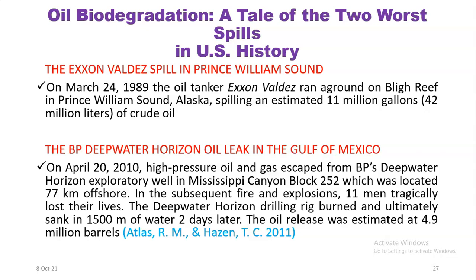The second case is the BP Deepwater Horizon oil leak in the Gulf of Mexico. On April 20, 2010, high-pressure oil and gas escaped from BP's Deepwater Horizon well located approximately 77 kilometers offshore in Mississippi Canyon Block 252. In the subsequent fire and explosions, eleven men tragically lost their lives. The Deepwater Horizon drilling rig burned and ultimately sank in 3,500 meters of water two days later. The oil release was estimated at 4.9 million barrels, and microorganisms were used in the cleanup process.